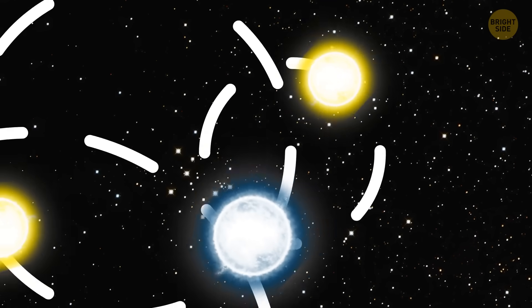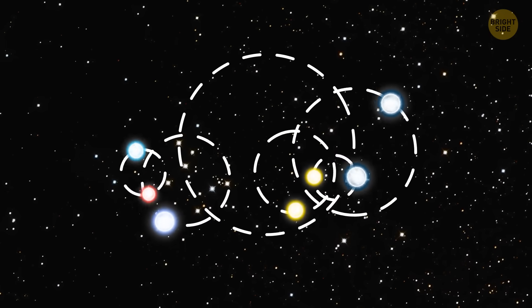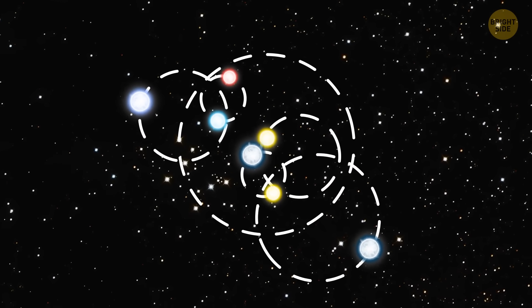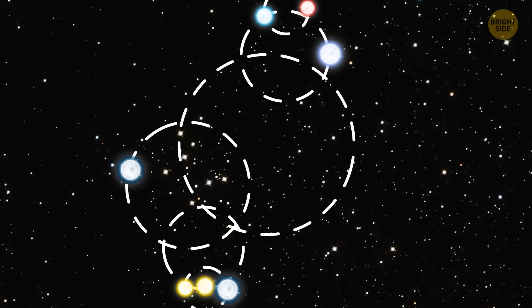And just imagine, this isn't even the most complex of the systems we've discovered. For example, have you heard of AR Cassiopeia? It's a septuple star system, meaning it has seven stars orbiting around each other.